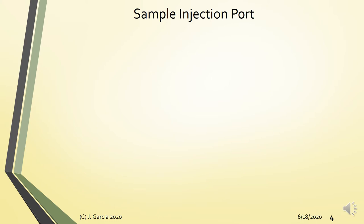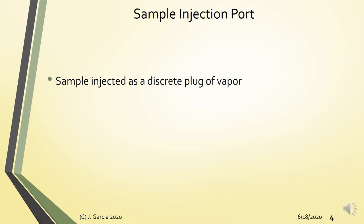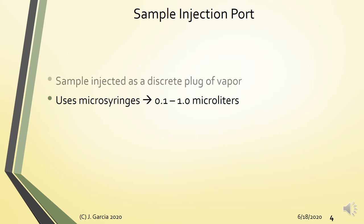In gas chromatography, the sample is injected as a discrete plug of vapor. You can inject your sample either as a gas or as a liquid, because the temperature of the sample injection port is elevated enough that even a liquid sample will be vaporized. To introduce the sample, you need a microsyringe. For liquid samples, typical volumes are 0.1 to 1 microliter, normally made from glass with a stainless steel plunger.